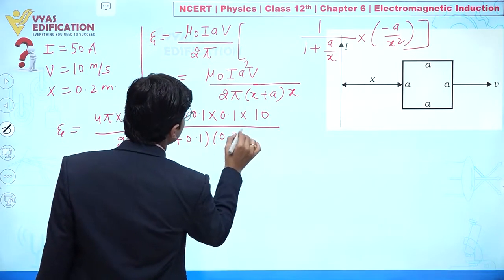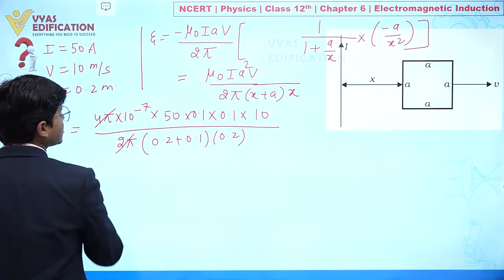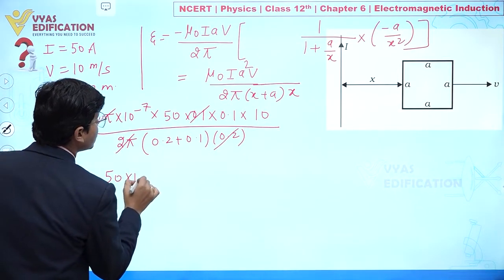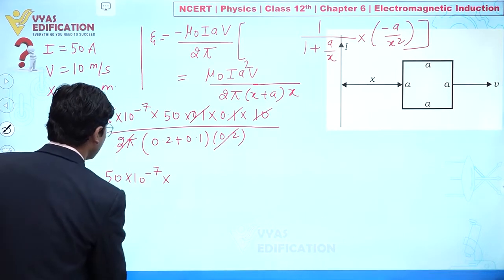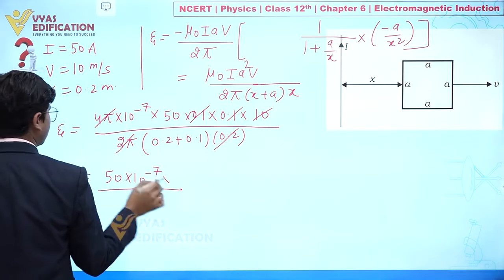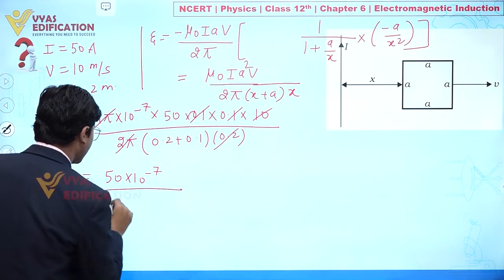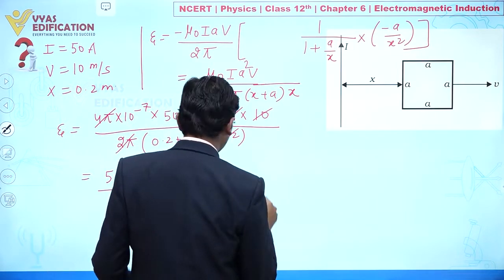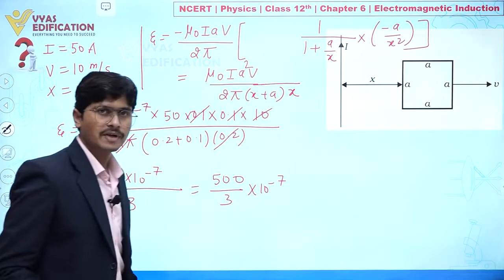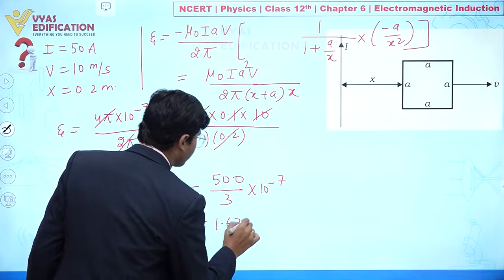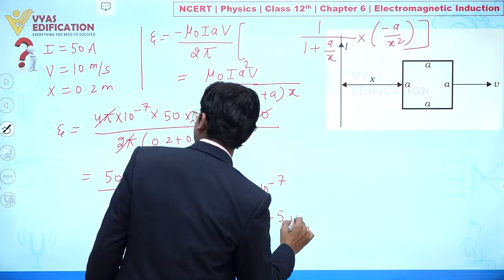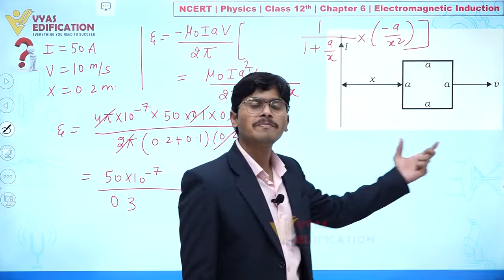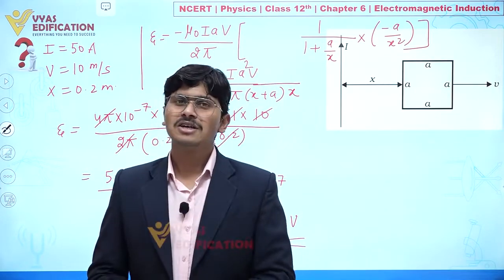After cancellations, this simplifies to 500/3 × 10⁻⁷, which equals 1.67 × 10⁻⁵ volt. This is the value of induced EMF at x = 0.2 meter.